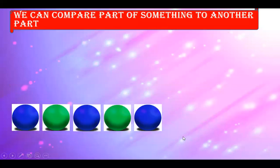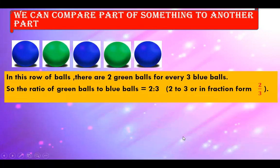We can compare part of something to another part. In this row of balls, there are two green balls for every three blue balls. So, the ratio of green balls to blue balls is 2 is to 3, or 2 to 3, or in fraction form we can say it is 2 by 3.